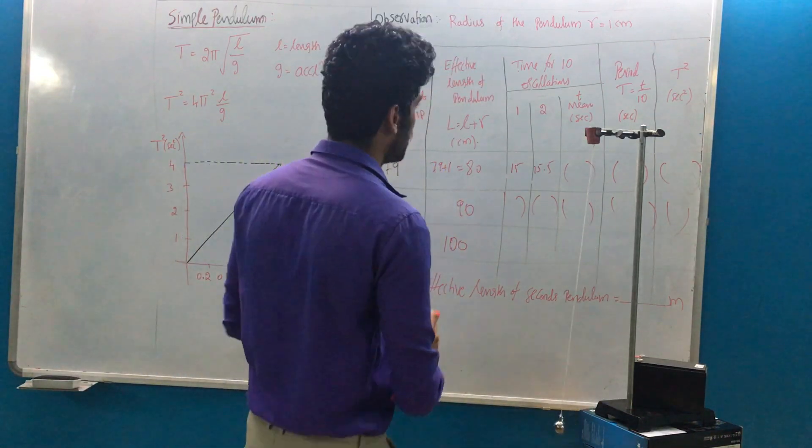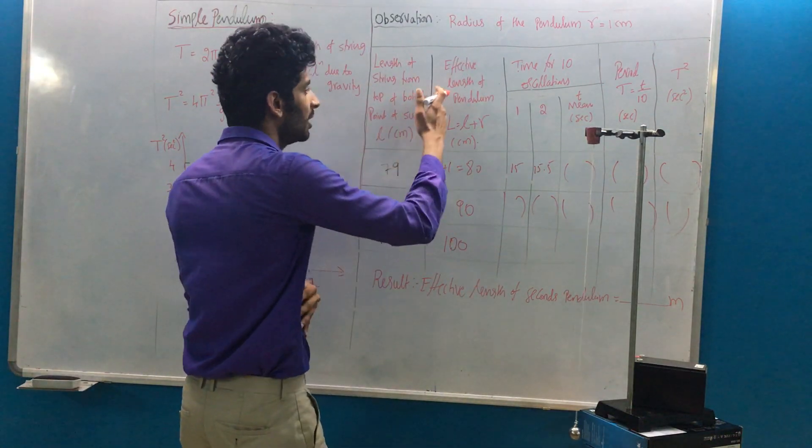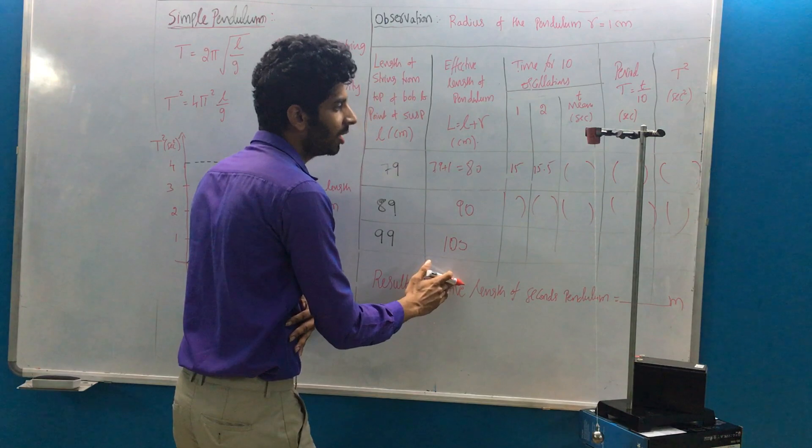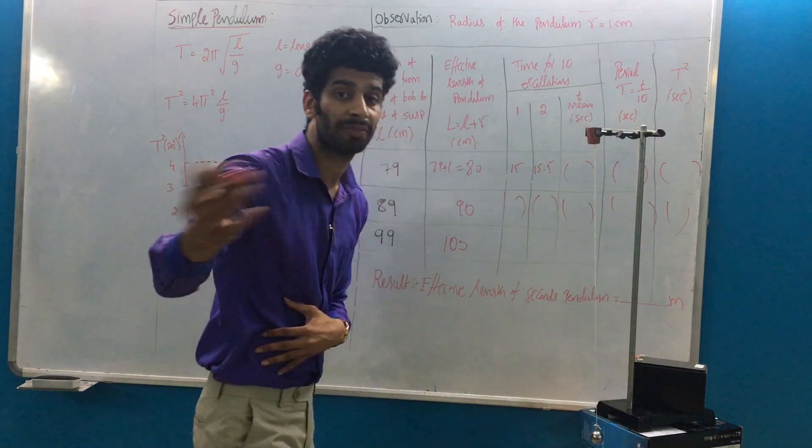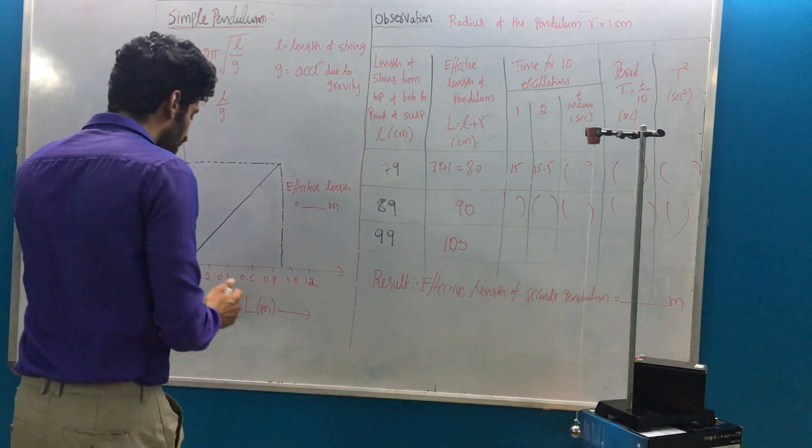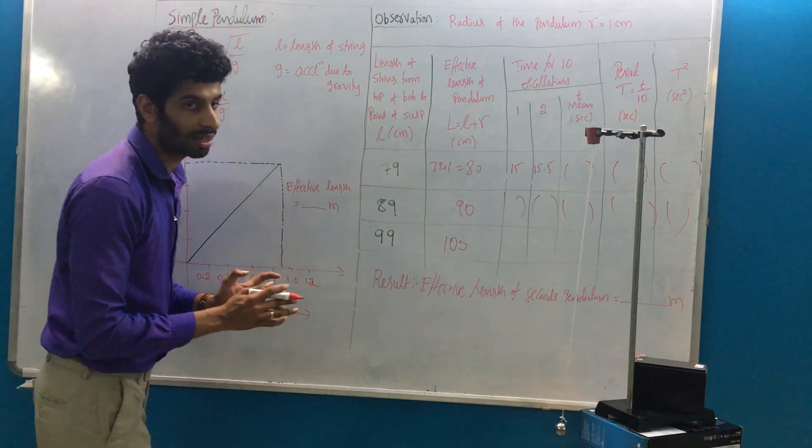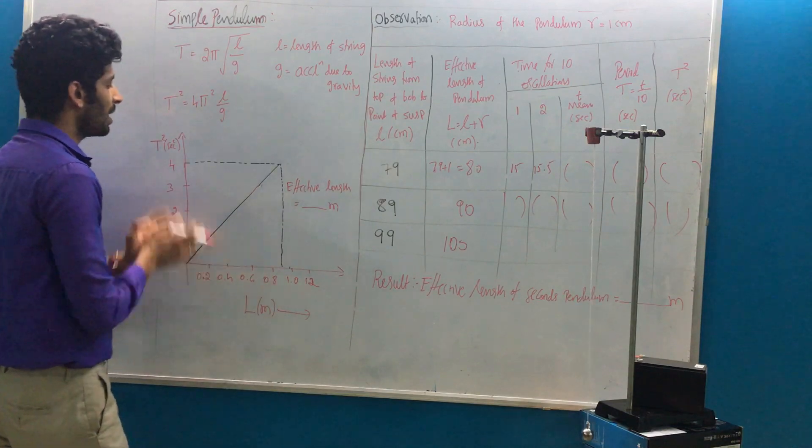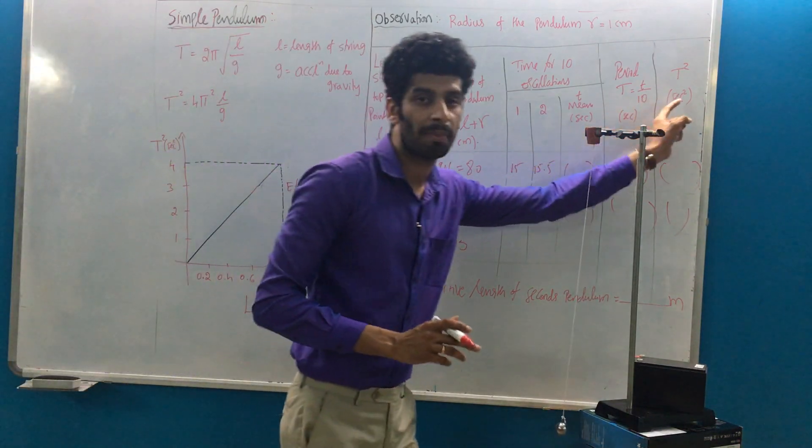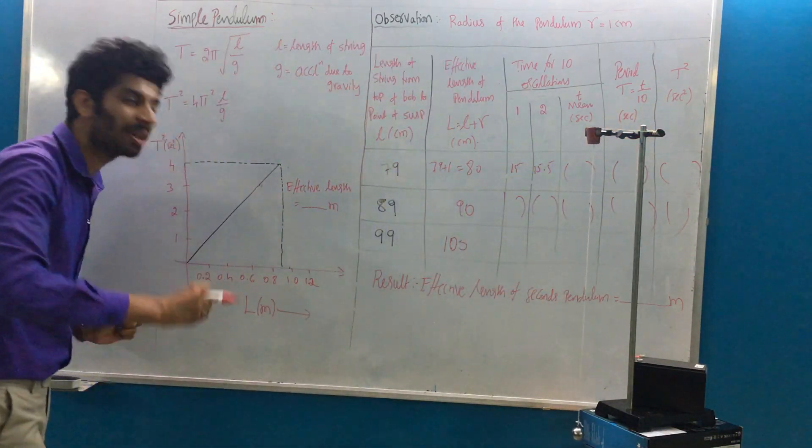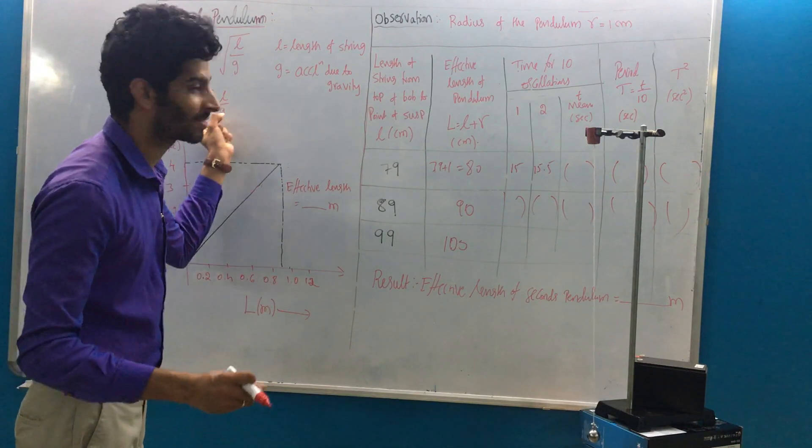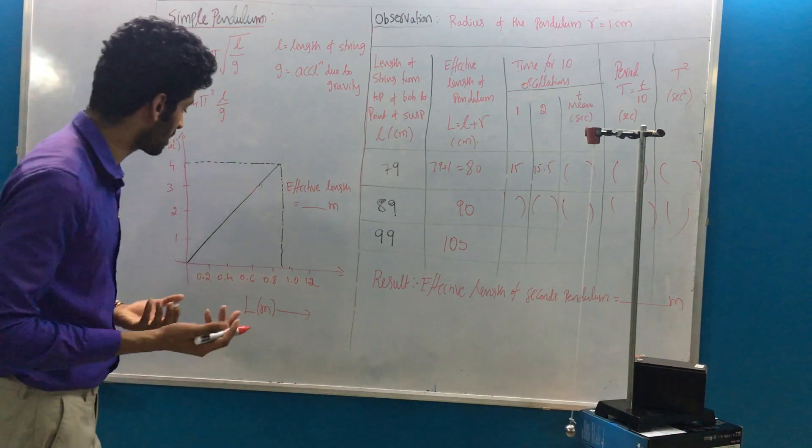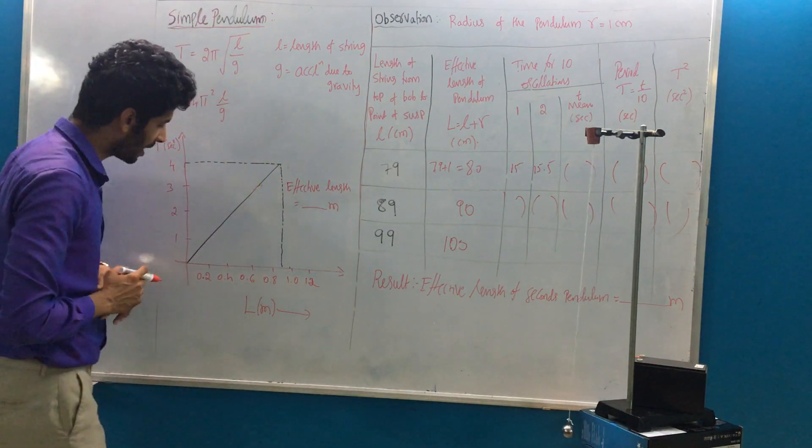You can have tabulation of values with the effective length and corresponding T². You can plot the graph with effective length along the x-axis and square of the time period along the y-axis. Obviously you'll get a straight line. The equation itself tells the same thing; there is a linear relationship. Once you get the straight line, you write the scale.